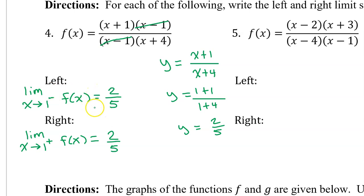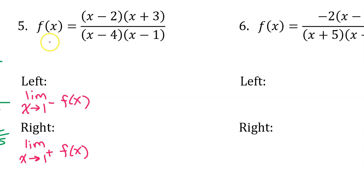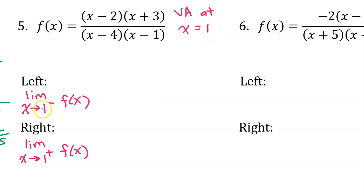So the left limit and the right limit are both two-fifths. For number 5, we notice that the x minus 1 factor does not cancel out with anything. That means we have a vertical asymptote at x equals 1, which means that the left limit and the right limit will both be some kind of infinity. To figure out whether it's positive infinity or negative infinity, we can make a partial sign chart.